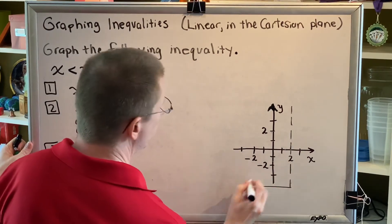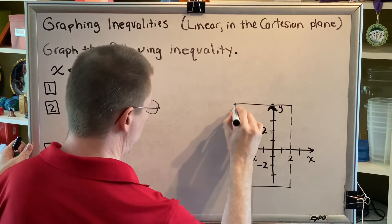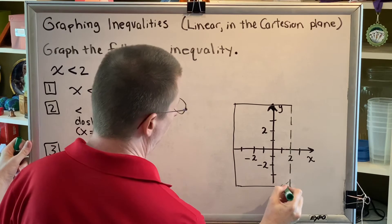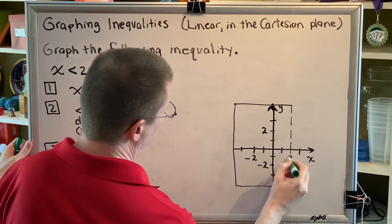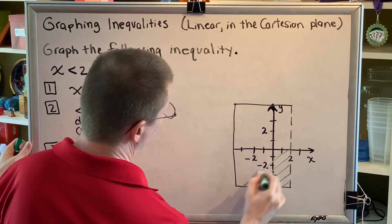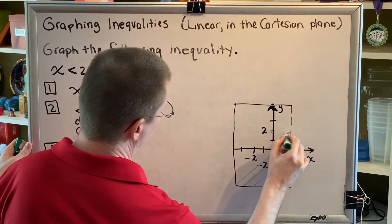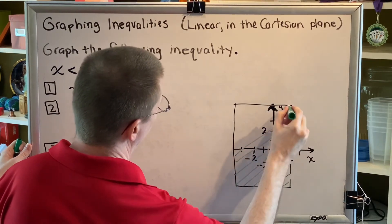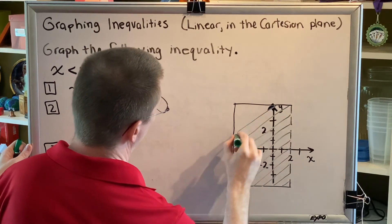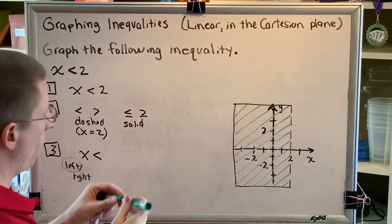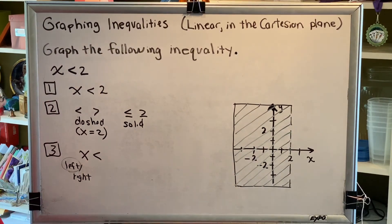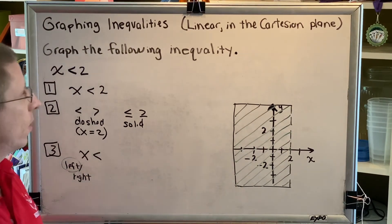We're going to box this in, and then we're going to shade to the left of our line. And there we go. This is the graph of the linear inequality x is less than 2.